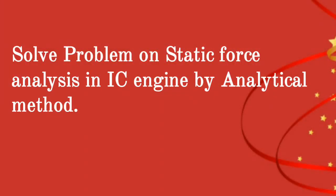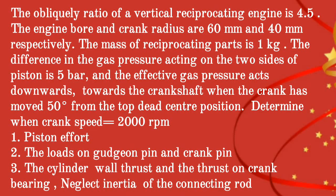Solve a problem on static force analysis in an IC engine by analytical method. Given question: the obliquity ratio of a vertical reciprocating engine is 4.5. The engine bore diameter and the crank radius are 60 mm and 40 mm respectively. The mass of the reciprocating parts is 1 kg. The difference in gas pressure acting on the two sides of the piston is 5 bar, and the effective gas pressure acts downwards towards the crankshaft when the crank has moved 50 degrees from the top dead center position.